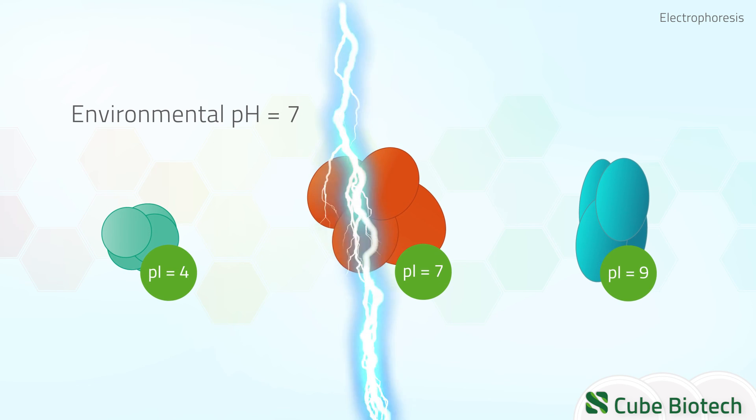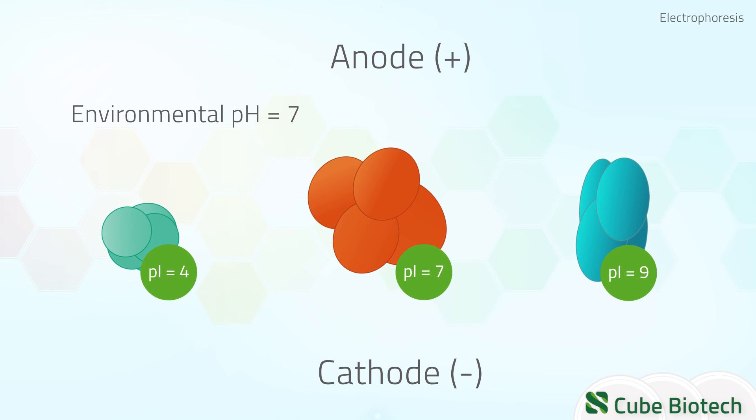Placing them into an electric field leads the proteins to move in different directions. Positively charged proteins move towards the cathode, negatively charged proteins towards the anode. And if the PI equals the pH, they do not move at all.